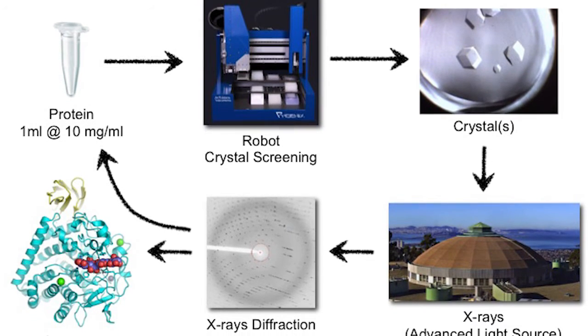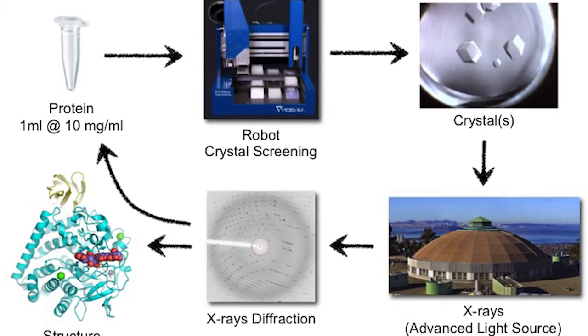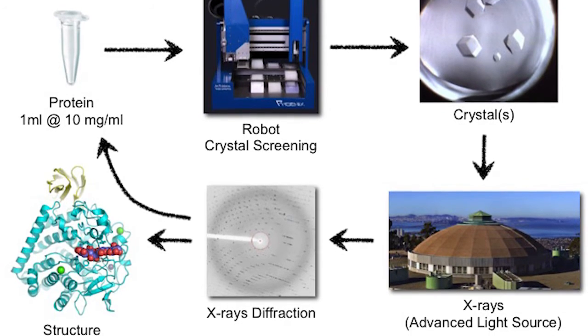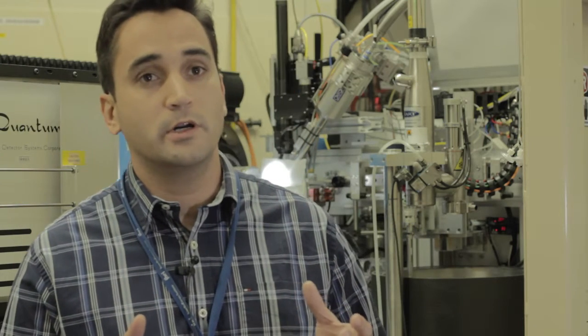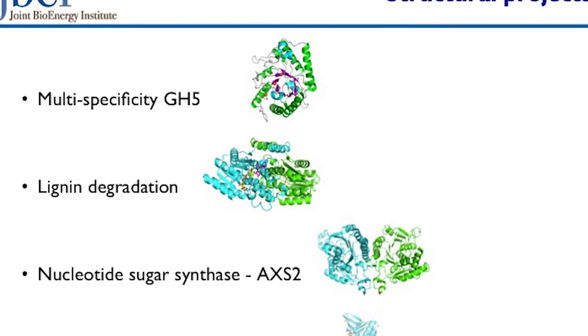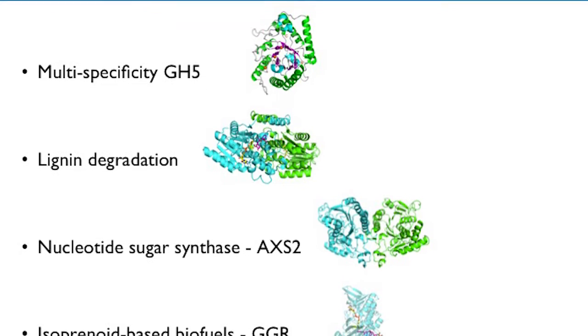From this information, we can extract how a protein or enzyme looks like, its shape and size. Based on this information, we understand how an enzyme works. Using high-resolution structures, we can help the JBAE mission.